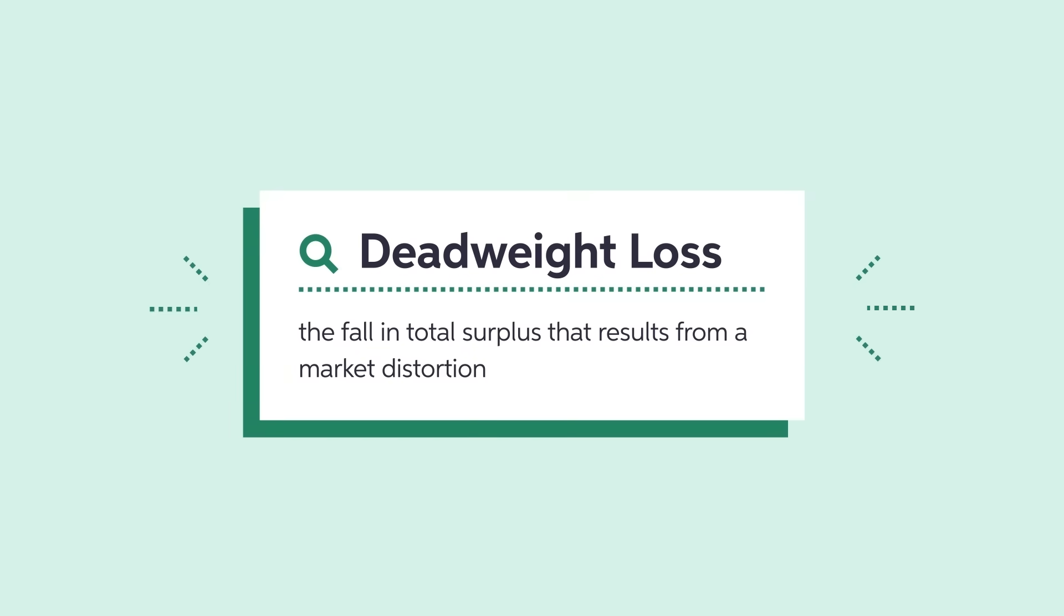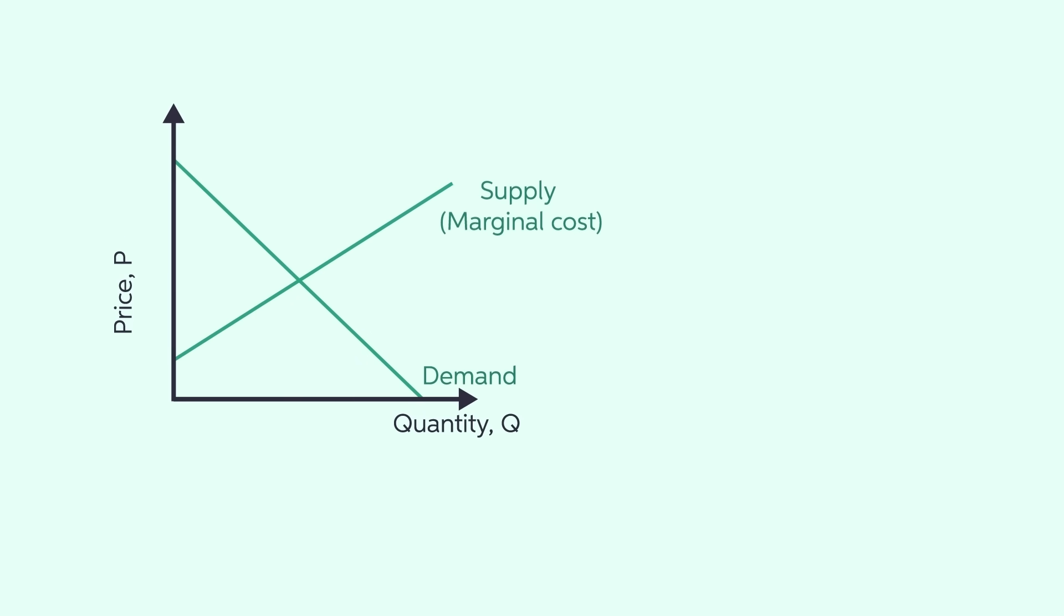Deadweight loss is defined as the fall in total surplus that results from a market distortion, such as a monopoly. We can quantify the deadweight loss by calculating the difference between the social surplus under perfect competition minus the social surplus under a monopoly. When we're dealing with linear demand and supply functions, the deadweight loss corresponds to the area of the red shaded triangle. Here you can see how to calculate that area.